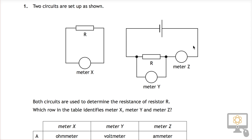This other circuit looks like the setup you might use for determining the relationship V equals IR. Certainly if this was a variable power supply, you could use it to determine V equals IR. The meter going across the resistor would be a voltmeter, and the meter going in series with the circuit would be an ammeter.